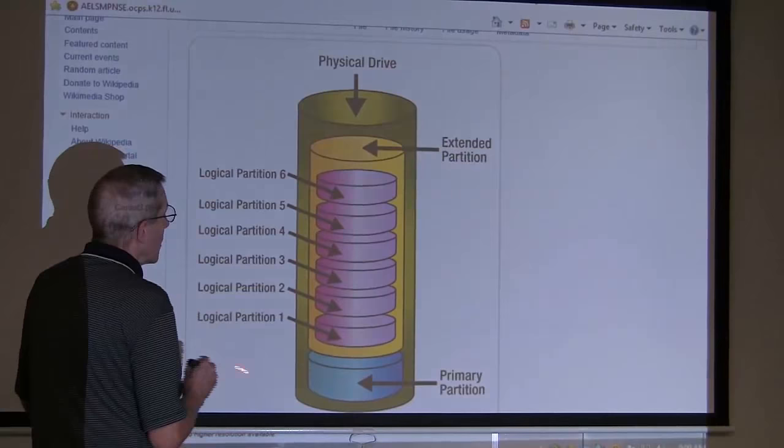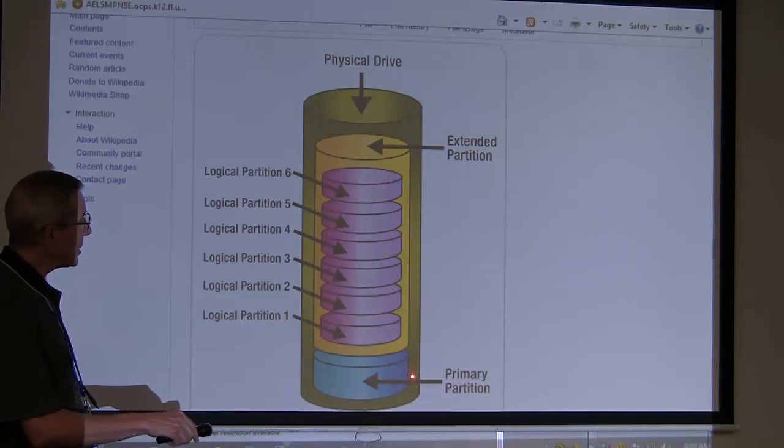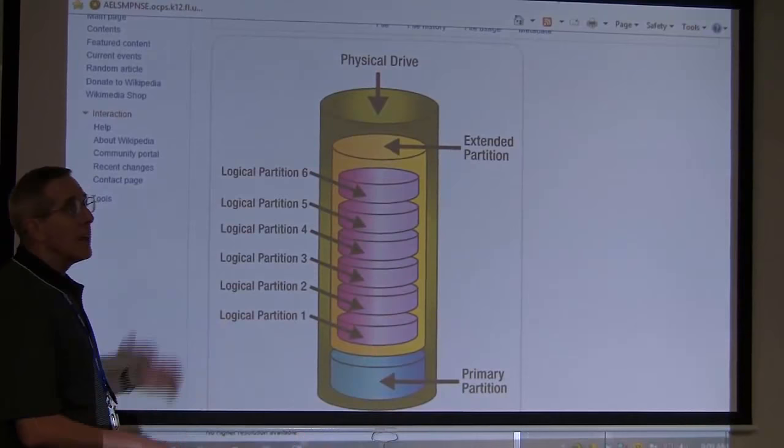Number one, with the Master Boot Record partitioning system, the old style, you could have two types of partitions. You could have a primary partition, and an extended partition. That is very important.